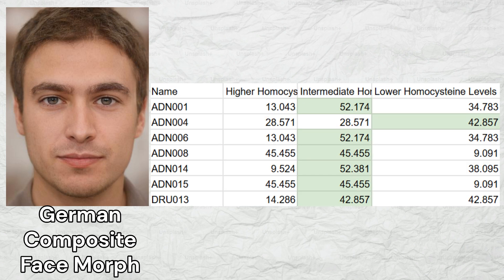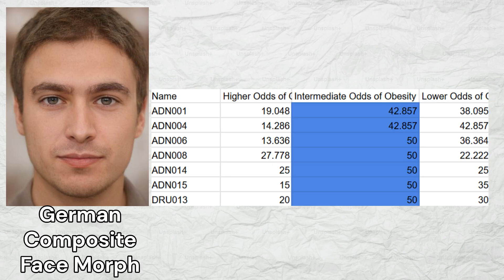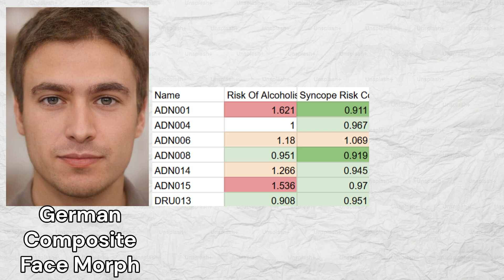The early Germans were predisposed to intermediate homocysteine levels, with six samples scoring intermediate and one sample scoring lower. Two samples had low odds of ischemic stroke, two samples had low odds of atrial fibrillation, one sample had low odds of deep vein thrombosis, and one sample had very high odds of a wide range of cardiovascular issues ranging from blood clots to myocardial infarction. Every sample was predisposed to average odds of obesity. The early Germans had a predisposition to alcohol dependence and a protection from syncope.